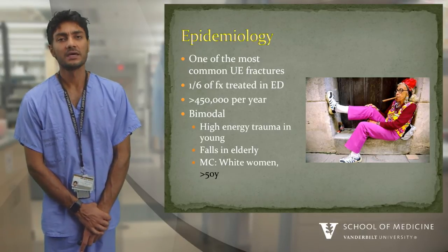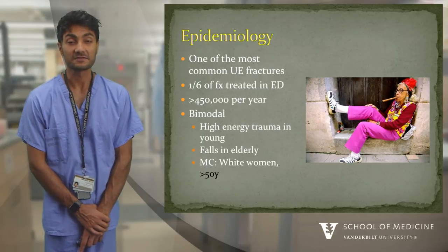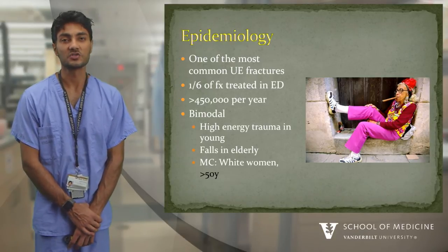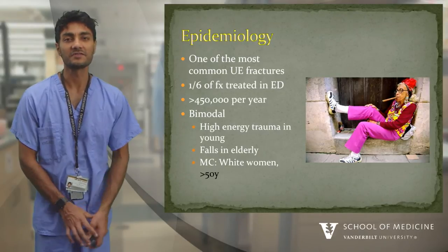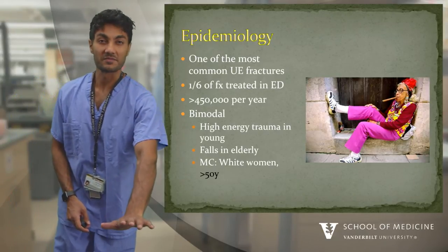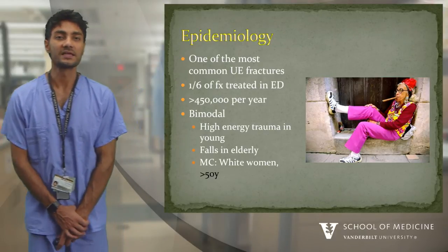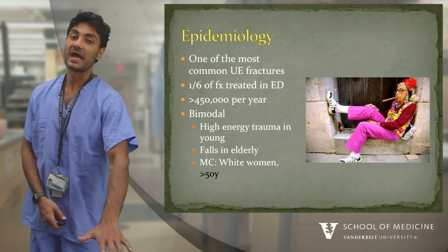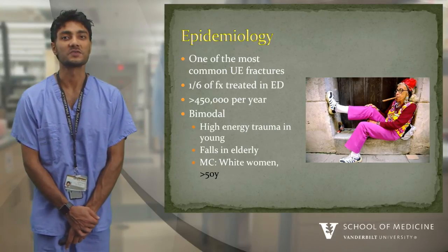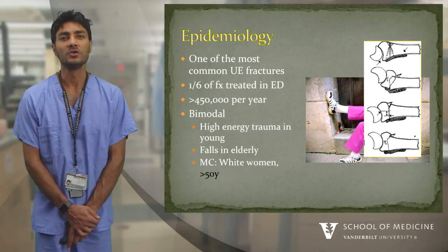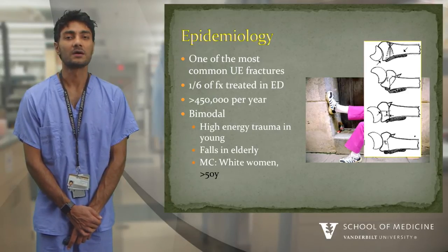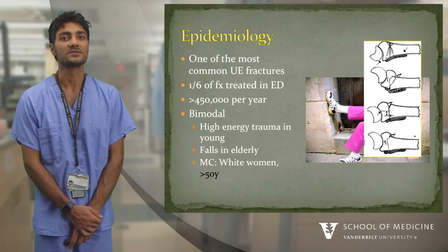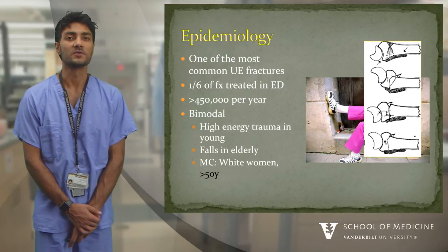Interestingly, as the population gets older but remains more active, they tend to preserve their reflexes. Semi-conditioned older folks are still able to put their hand out before they fall, sustaining a distal radius fracture. Deconditioned folks, however, can't react in time and usually fall directly on their shoulder, sustaining a proximal humerus fracture. The usual fracture mechanism involves tension on the volar side — volar cortex failure in tension — and comminution on the dorsal side, failing in compression.